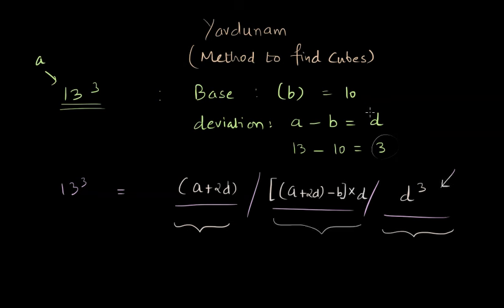Now remember, because our base is 10, it has only one zero, and that's why the rightmost and the central part will only have one place. And if there is any carry that gets generated, it will flow towards the left. So now let us compute each and every part.